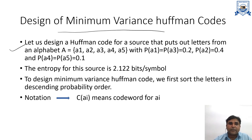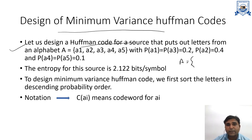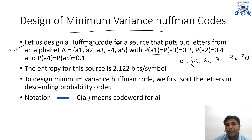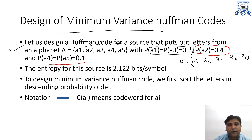Now come to the designing part of minimum variance Huffman code. I am taking the same example as in the Huffman code. We have to design a Huffman code for a source alphabet A having the symbols A1, A2, A3, A4, and A5. These symbols have certain probabilities: the probability of A1 and A3 is the same, that is 0.2; the probability of A2 is 0.4; and the probability of A4 and A5 is the same, that is 0.1. The entropy for this source is 2.12 bits per symbol.